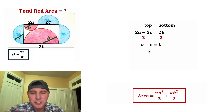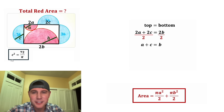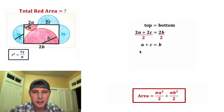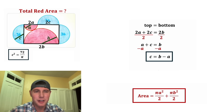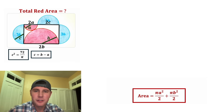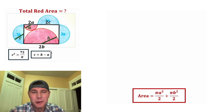To simplify, everything has a 2 so let's divide everything by 2, leaving us with a + c = b. We isolated c², so for this one let's isolate c. If we subtract a from both sides we get c = b − a. This looks important, let's put a box around it and move it up here.